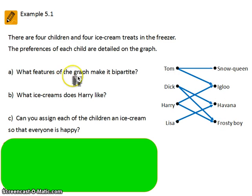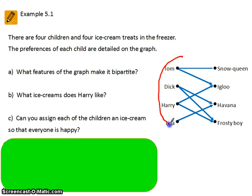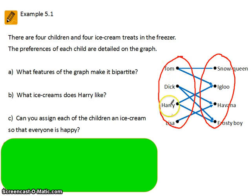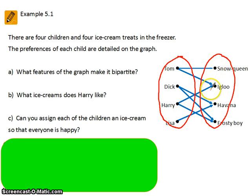The first question is: what features of the graph make it bipartite? In order to be bipartite you must have two sets of data which are linked to each other but are not linked within themselves. The left hand side links to the data on the right hand side, but there are no links between these. So Tom doesn't link to Dick, Harry, or Lisa, and Snow Queen doesn't link to Igloo or Havana. We're only linking these vertices here to these vertices over here.